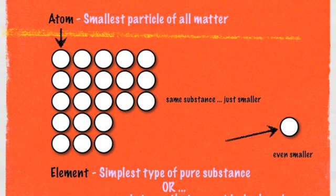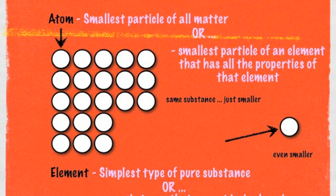I could even break it down even further — that's still an element, because the only thing that makes it up is that same pure substance, that same atom. So another way to define an atom is that it is the smallest particle of an element that has all the properties of that element. All the physical and chemical properties of that one small atom are the same as the rest of the element. An atom is the smallest particle of all matter, and also the smallest particle of an element that has all the properties of that element.